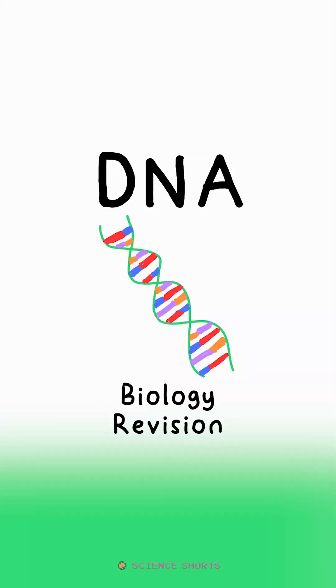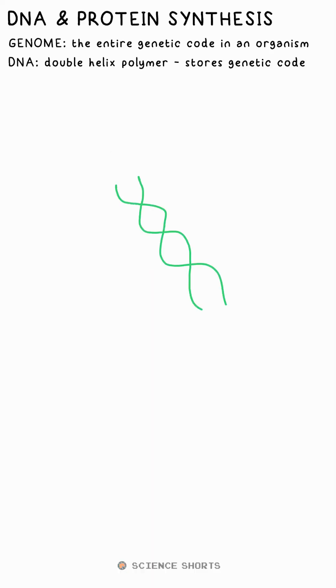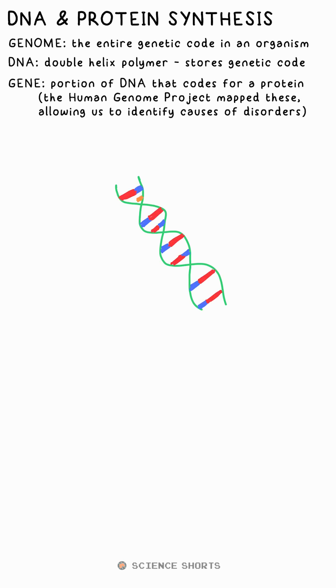Genome is the term given to all the genetic material in an organism. This code is stored in DNA, which is a two-stranded polymer in a double helix shape. A gene is a section of DNA that codes for a specific protein.